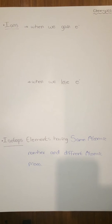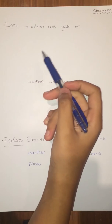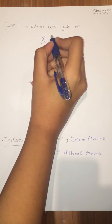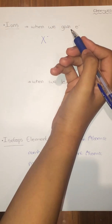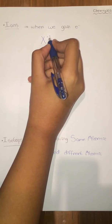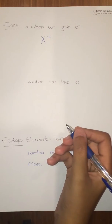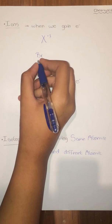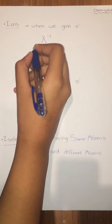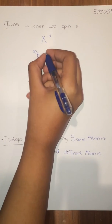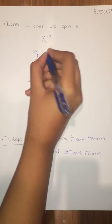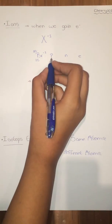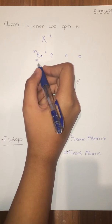We also have ions. If we gain electrons, we will have more negative charge, so the element will be shown like this: X with the symbol of the element and the negative charge we gained. For example, if we gained one electron, it will be negative one. Here they gave us an example on bromine (Br): its atomic number is 35, atomic mass is 80, and it gained one electron. They want us to find the number of protons, neutrons, and electrons.